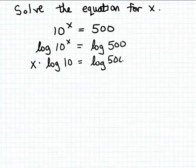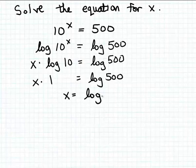So the common log of 10 or log base 10 of 10, of course, is just 1. So on the left hand side of this equation, we really have x times 1 is equal to the log of 500. And so there's the solution to the equation: x is going to be the common log or log base 10 of 500.